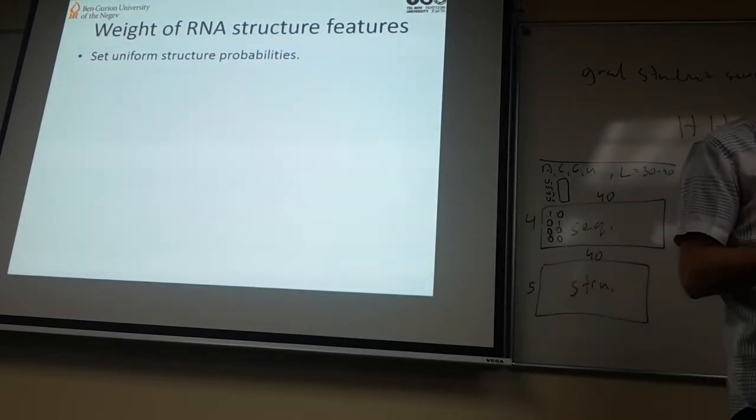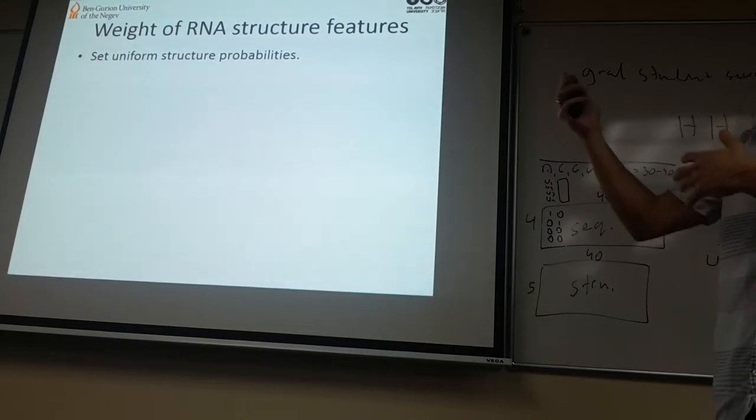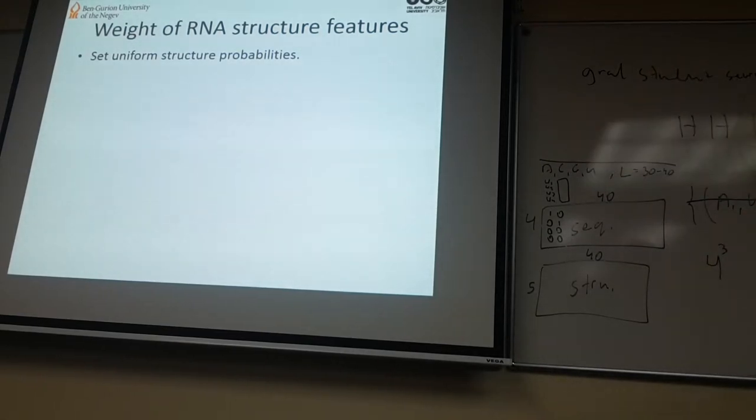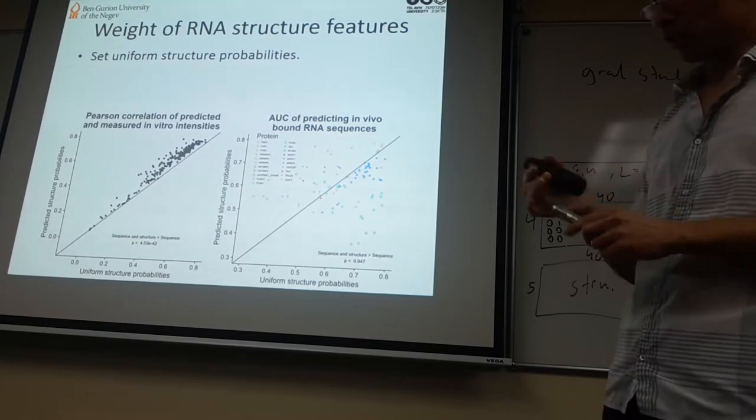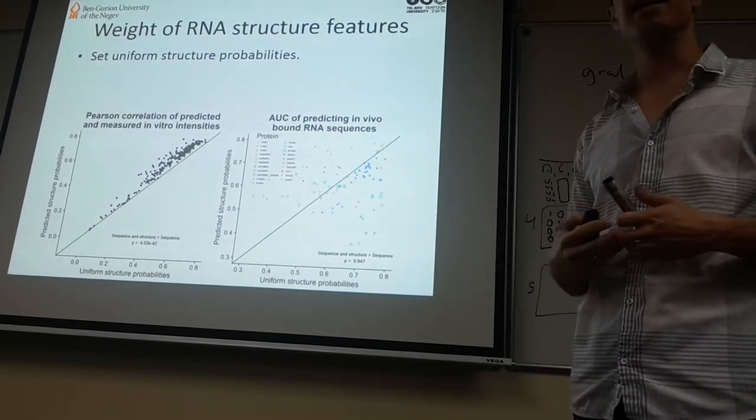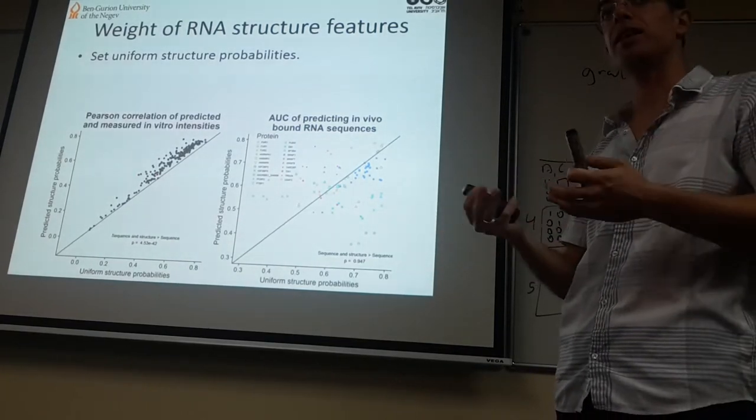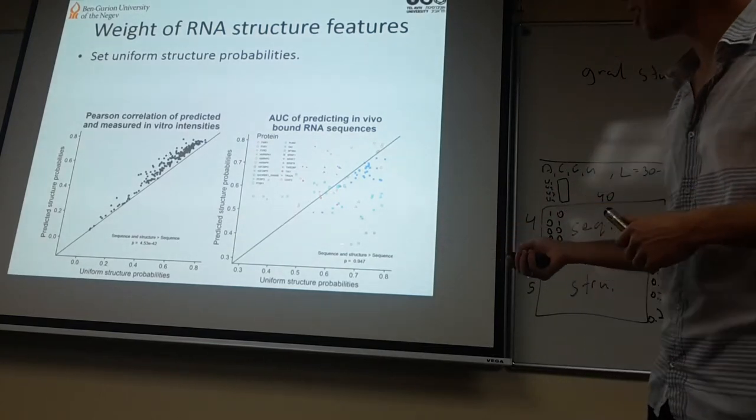Next we asked, what is the weight of the RNA structure features? For this aim we used the same test of in vitro and in vivo binding. But what we did here: we trained on real structure probabilities, so this was real. But now for the test data, we put uniform probabilities, so 0.2, 0.2, 0.2, 0.2, and 0.2. We saw what's the difference between when we test with these uniform probabilities compared to the real probabilities. This is what we see here. First of all for the in vitro data, we see that adding structure really helps. You see improvement in all of these dots, they're all above the line. Using real structure probabilities helps and improves the prediction accuracy. But here for the in vivo case, it's a mess, right?